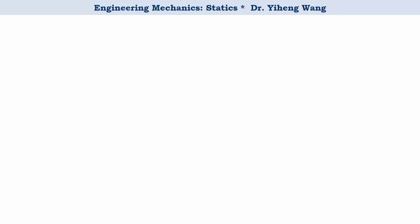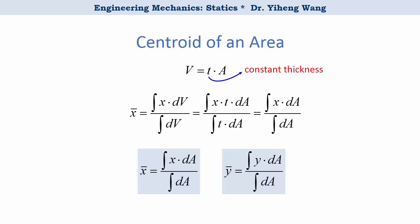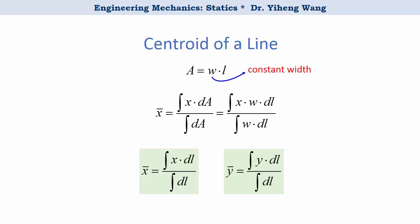And if the volume has a uniform thickness, then we can further reduce the situation from 3D to two-dimensional and cancel out the thickness from this equation. And now we have coordinates for the centroid of an area. And sometimes we can even further reduce the situation by canceling out the constant width of an area and get the coordinates for the centroid of a line. The line could be either straight or curved.